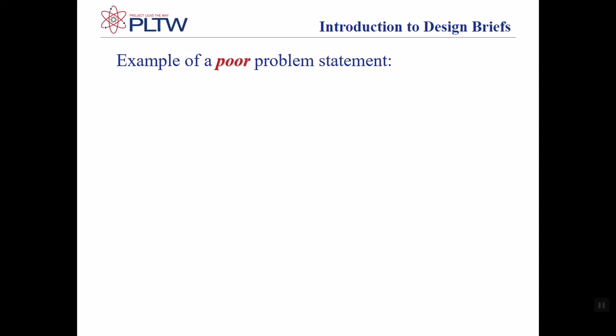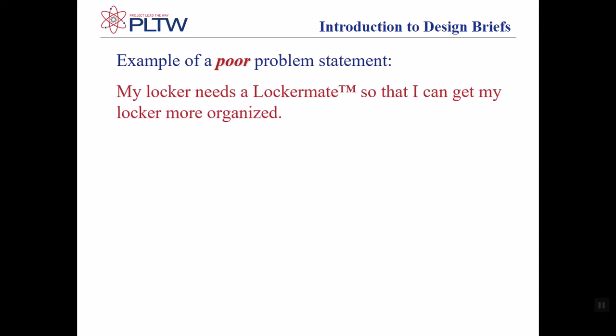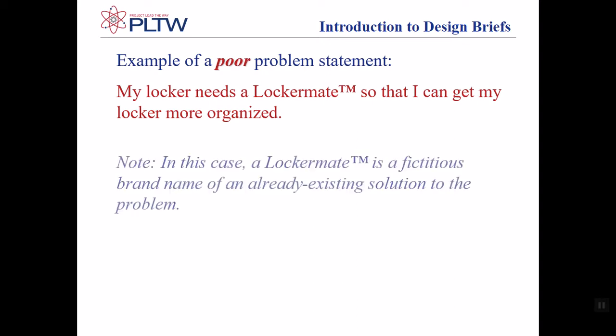Here's an example of a poor problem statement: my locker needs a lockmate so that I can get my locker more organized. In this case, a lockmate is a fictitious brand name of an already existing solution to the problem. Therefore, it is a poor statement because it basically already suggests the solution.